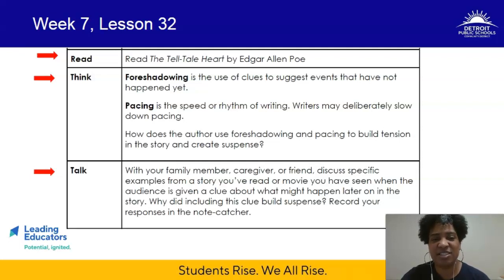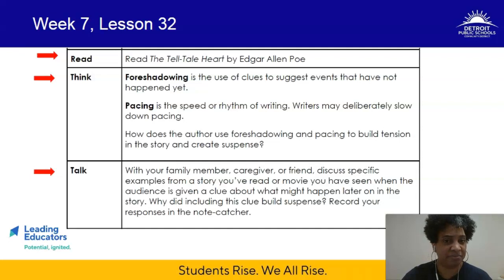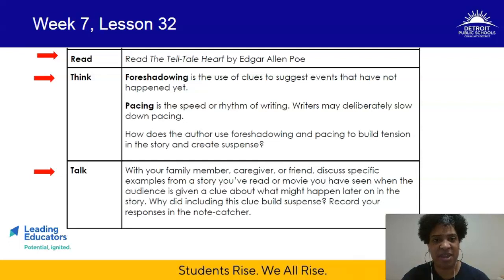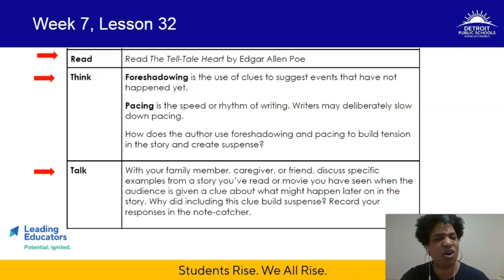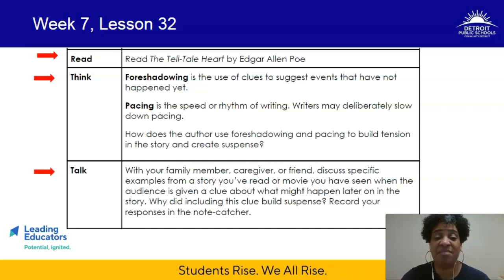Pacing is the speed or rhythm of writing. Writers may deliberately slow down the pacing or speed it up. They can speed up the pace by making dialogue short and quick and to the point — almost staccato, if you're a musician. Or they can slow it down by adding more descriptive words and longer sentences. It all depends on what the author is trying to accomplish. We're going to look at how the author uses both foreshadowing and pacing to build tension and create suspense.